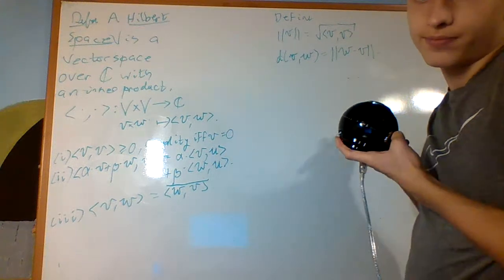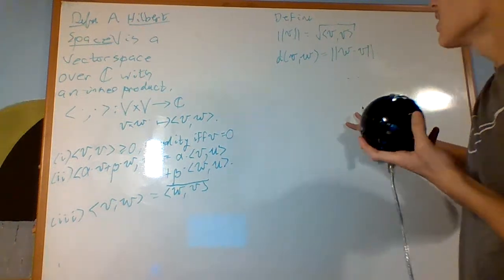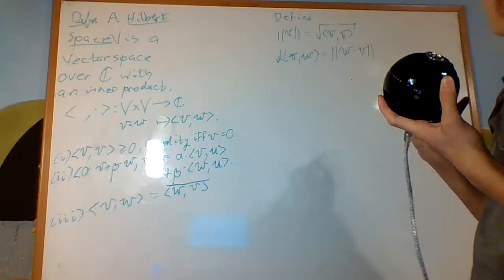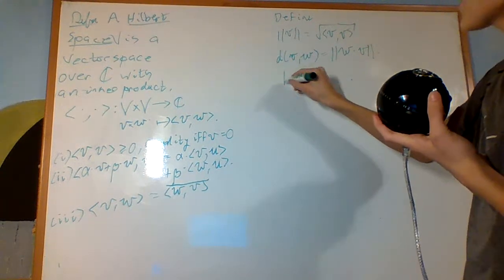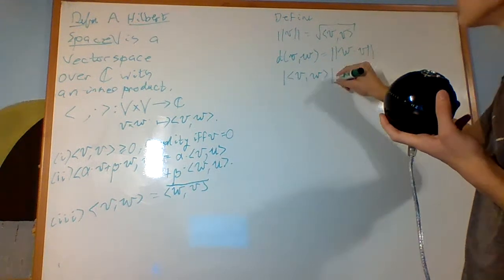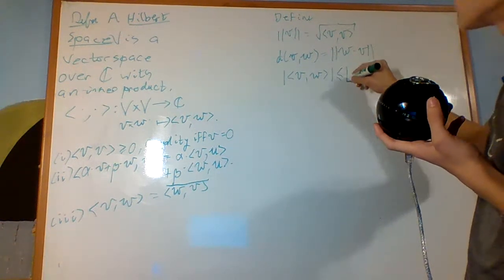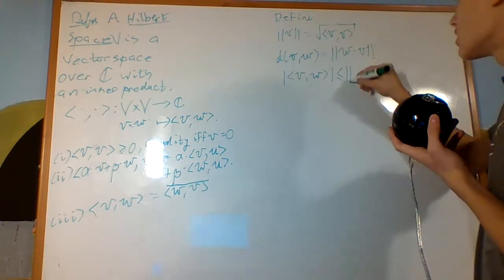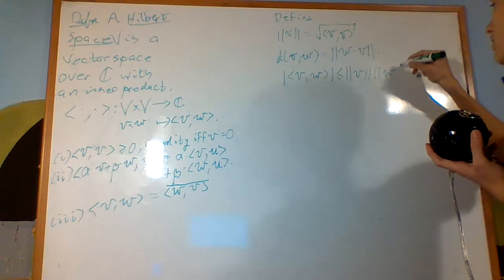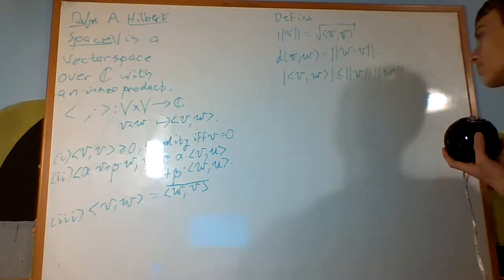It's not necessarily strange. It's just that the absolute value of the inner product with V and W has to be less than or equal to the norm of V times the norm of W.